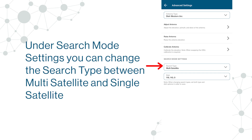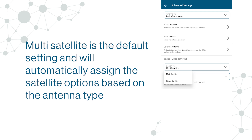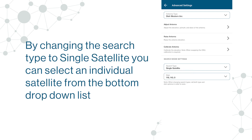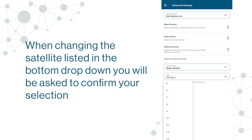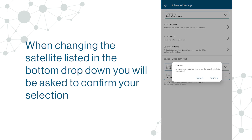Under Search Mode Settings you can change the search type between Multi-Satellite and Single-Satellite. Multi-Satellite is the default setting and will automatically assign the satellite options based on the antenna type. By changing the search type to Single-Satellite you can select an individual satellite from the bottom drop-down list. When changing the satellite listed in the bottom drop-down, you will be asked to confirm your selection.